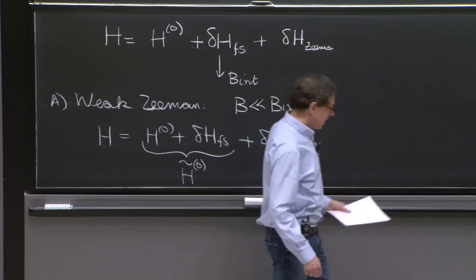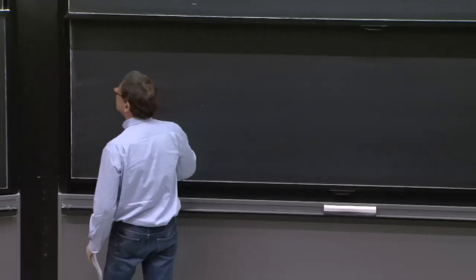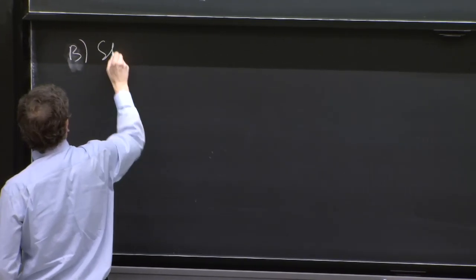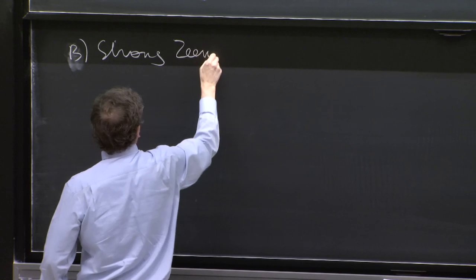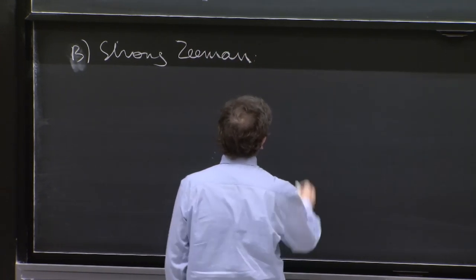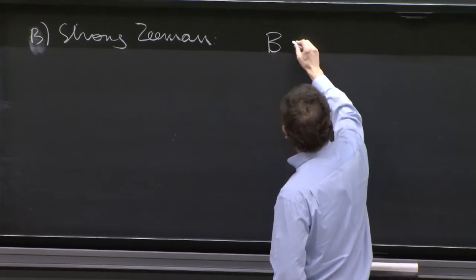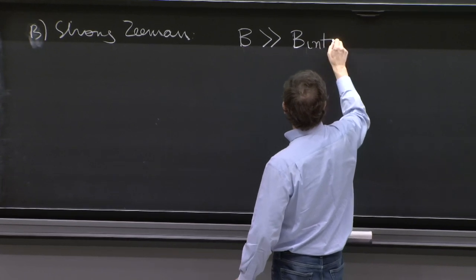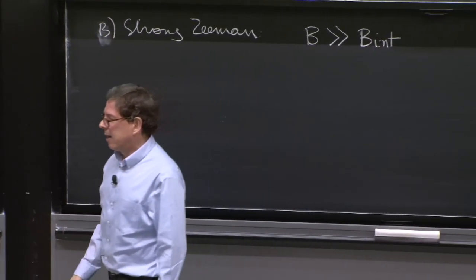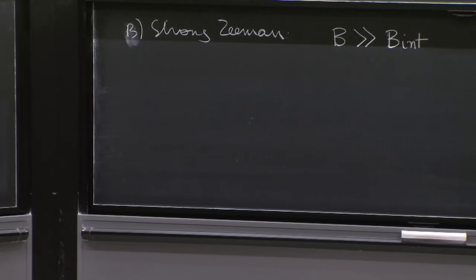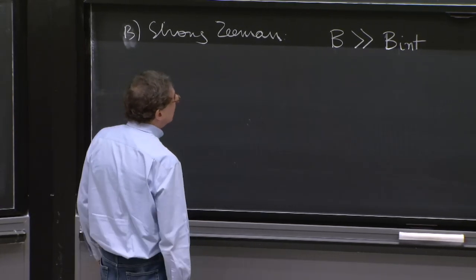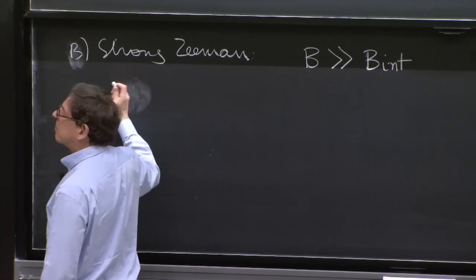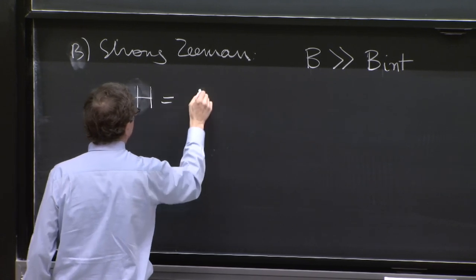This is the weak Zeeman effect. How about the strong Zeeman effect? So B will be strong Zeeman. This time, the magnetic field associated with the Zeeman effect, the external magnetic field, is much larger than the magnetic field responsible for spin orbit coupling. And this time, what are we going to do? Well, we will take the Hamiltonian to be H0.